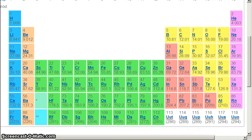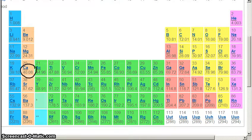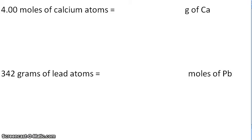You go to your periodic table and you see that your molar mass of calcium is 40.08. So go back to your example and you have 4 moles.